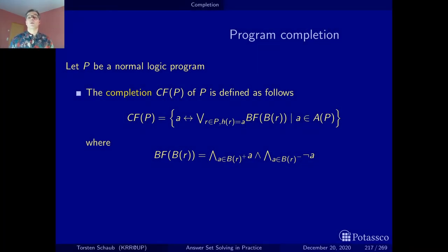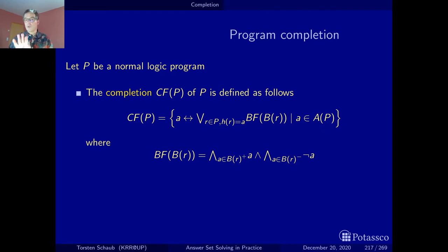Here is the definition of the completion of a normal logic program. It looks complicated but it isn't. What we actually do is look at all the atoms occurring in the program — not the full alphabet, which may be infinite, but just the atoms in the program — and for each of these atoms we build a biconditional (if-and-only-if) that defines the atom.